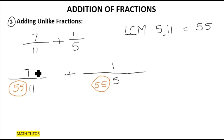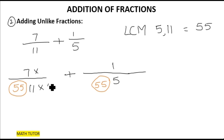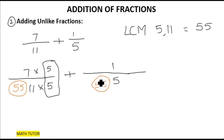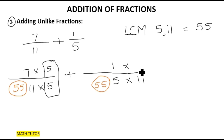My new denominator is fifty-five. What number do I multiply eleven by to get fifty-five? I multiply eleven by five to get fifty-five, so I also multiply the numerator by the same number five. For the second fraction, one-fifth: what number do I multiply five by to get fifty-five? Eleven — so I multiply the numerator by eleven as well.